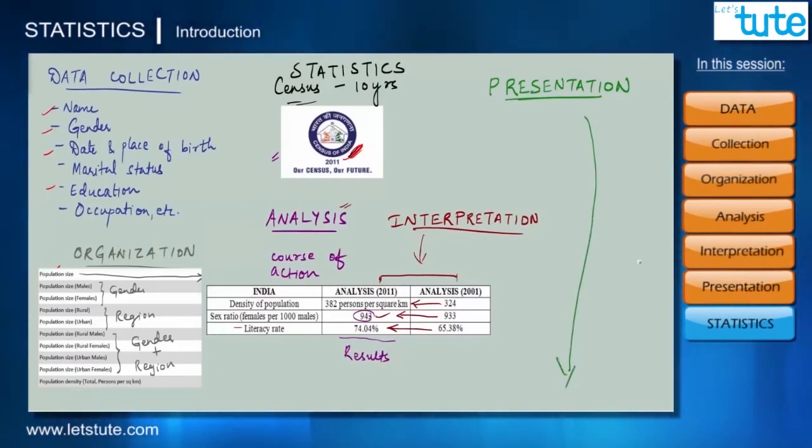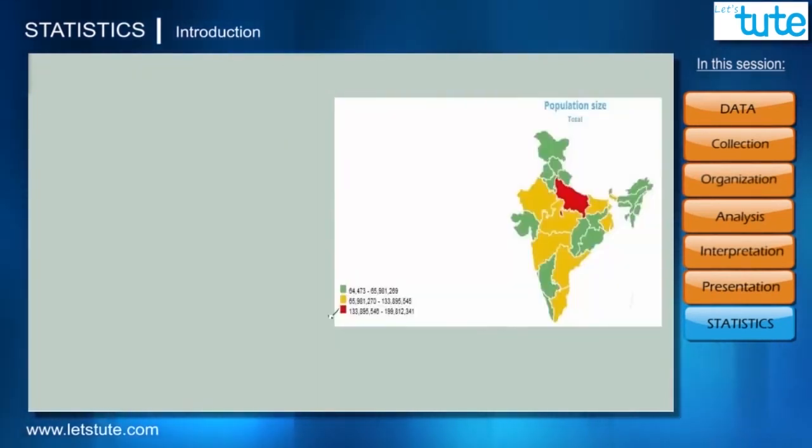For example, take a look at this map of India showing the distribution of population across the country. The red region is the region which is highly populated, followed by the yellow region and the green region. This whole data involving numbers has been color-coded and presented in a way which is very simple and easy to understand.